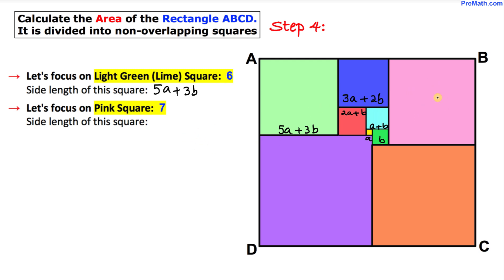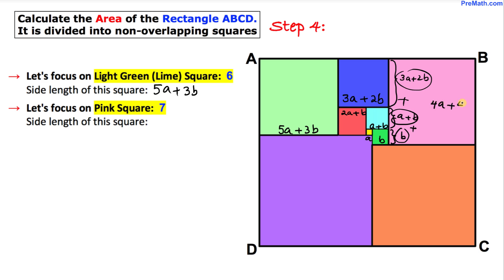Now let's focus on this pink square on the right-hand side. The side length of the blue square is 3a plus 2b, the aqua blue is a plus b, and the green square is b. To find the length of this pink square we simply add these three lengths: 3a plus a plus a is 4a, and 2b plus b plus b is 4b, giving us 4a plus 4b.